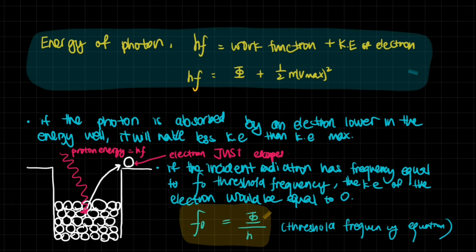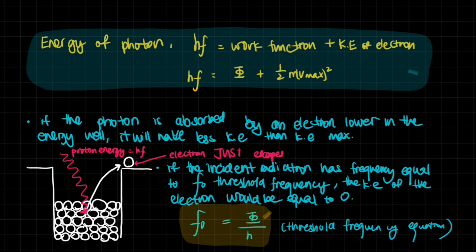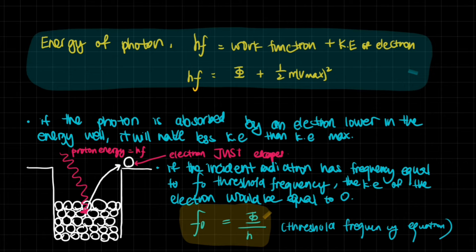The energy of a photon is E = hf (Planck's constant times frequency). This energy is completely transferred to the electron, so: hf = φ + ½mv². The photon energy equals the work function plus the kinetic energy of the emitted electron — conservation of energy applies here. If the photon is absorbed by an electron lower in the energy well, that electron will have less kinetic energy than the maximum, because it needs more energy just to escape the stronger resistive force pulling it in.